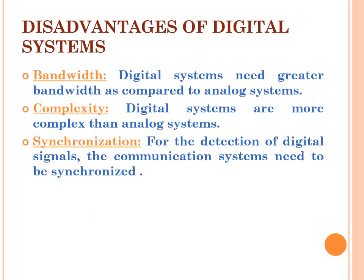What are the disadvantages of digital systems? Bandwidth — digital systems require more bandwidth in comparison to analog systems. Complexity — digital systems are more complex compared to analog systems. Synchronization — to detect any digital signal, the communication system must be synchronized.